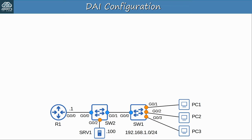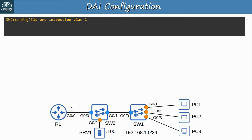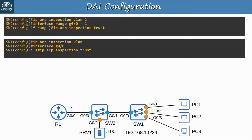Now let's move on to DAI configuration. First, use the command ip arp inspection vlan followed by the VLAN number to enable DAI on a VLAN. In this network I'm using VLAN 1 only. However, if there are multiple VLANs you should enable DAI for each one. Then I configured SW2's G0/0 and G0/1 interfaces as trusted ports with the command ip arp inspection trust. Those are the basic commands to enable DAI and configure trusted ports.